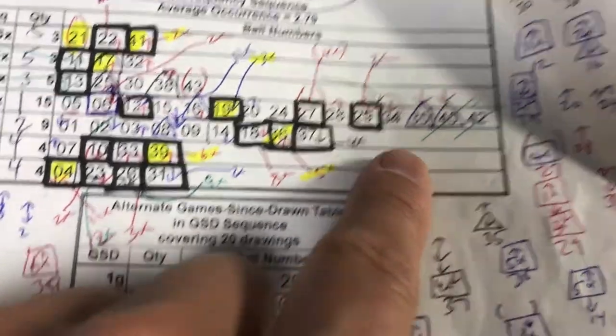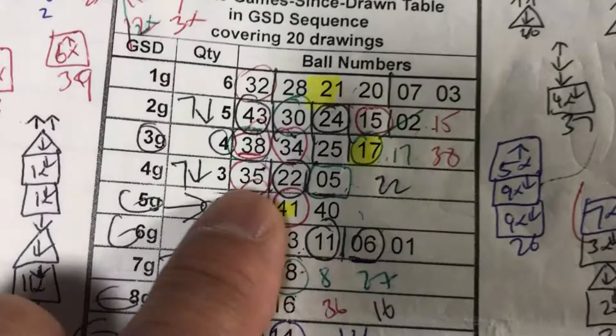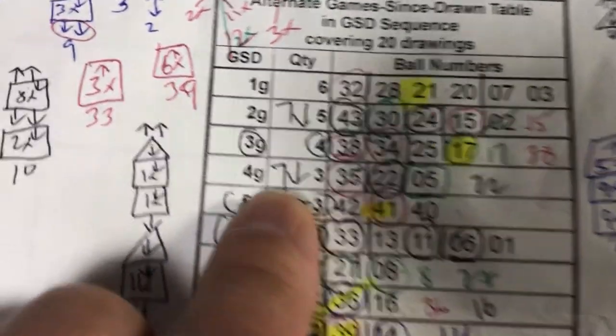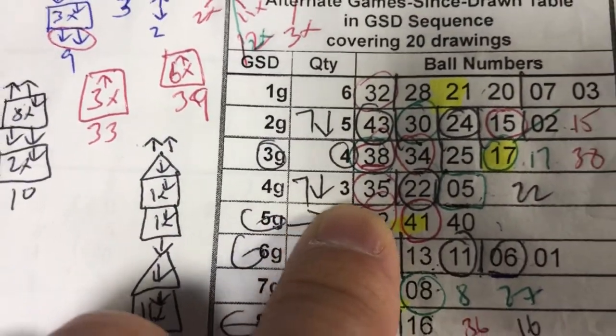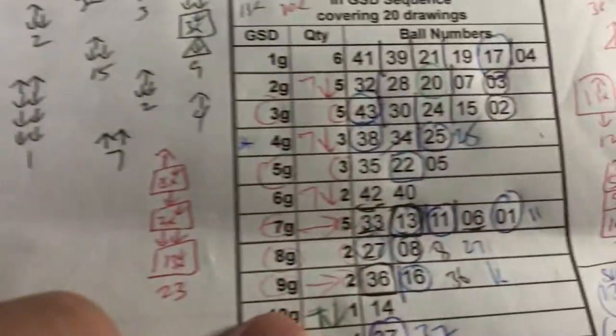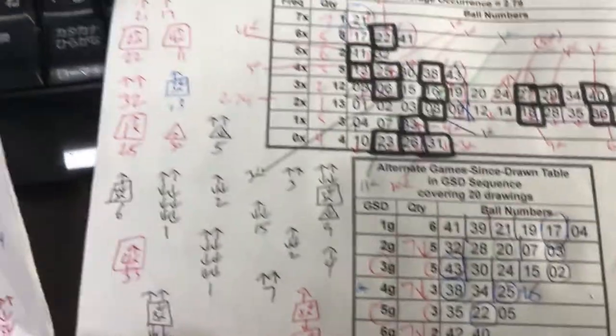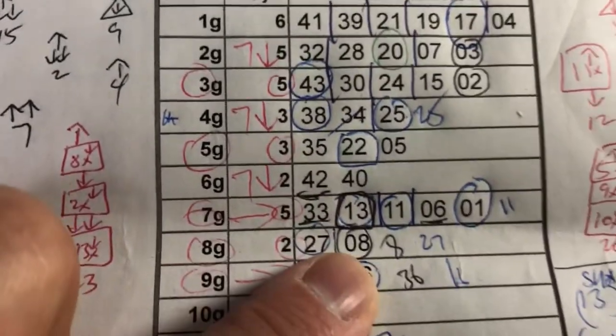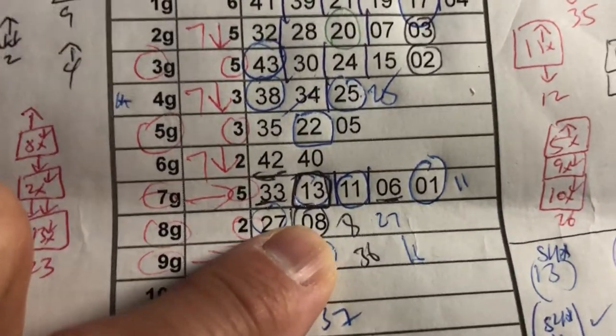So where was it? It was here, and I'll have to explain these arrows to you another time. So if I look at today's October 19th draw, number 35.